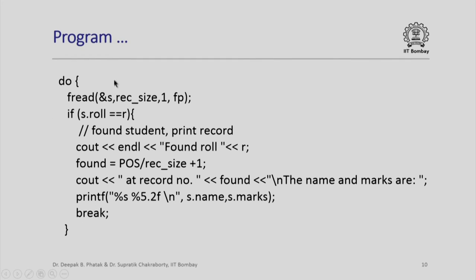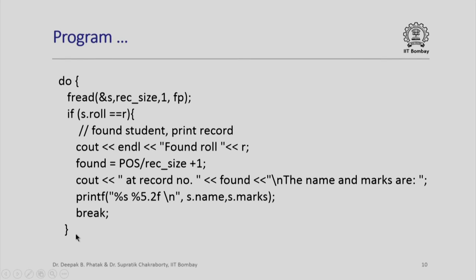Otherwise, what do I do if that is not so? I again recalculate the pos which will be the current position, which will be the next position after that record, and I read the next record and go back for the while loop.